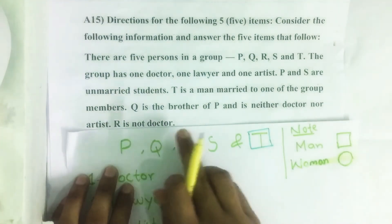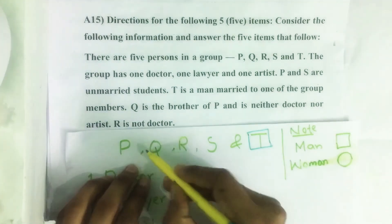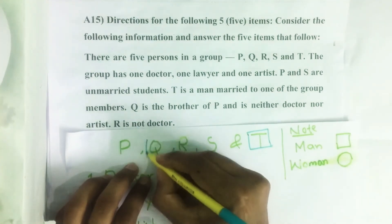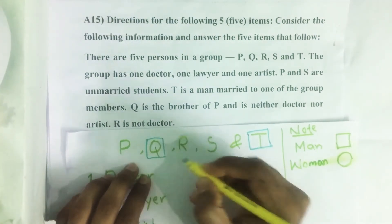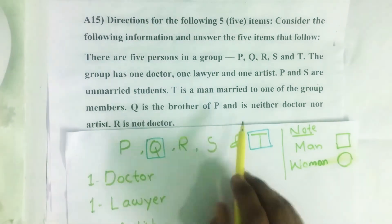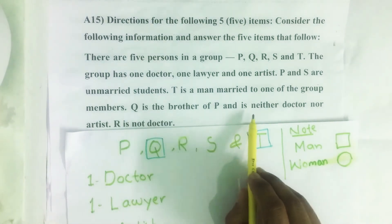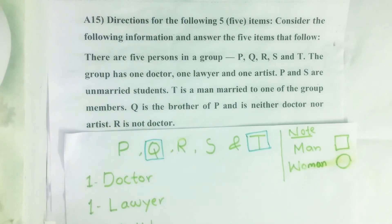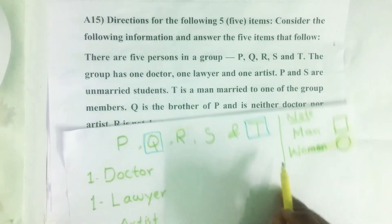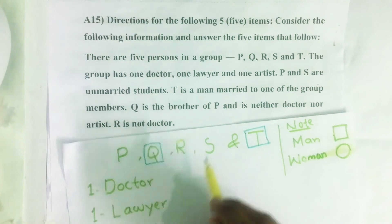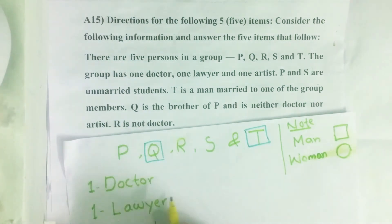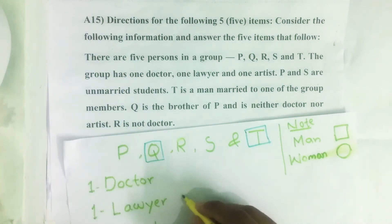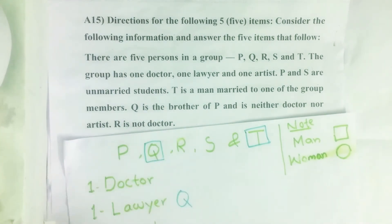Q is the brother of P, which means Q is also a man. Q is neither doctor nor artist — that means the only remaining option is that Q is a lawyer.